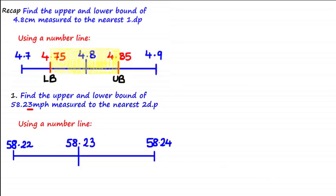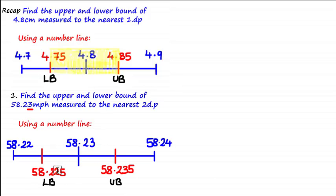To find the upper and lower bounds we simply find the midpoints. The midpoint of 58.22 and 58.23 is 58.225, which is our lower bound, and the midpoint of 58.23 and 58.24 is 58.235, which is our upper bound.